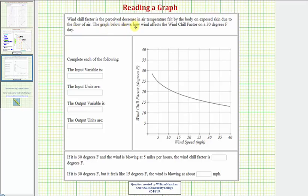Windchill factor is the perceived decrease in air temperature felt by the body on exposed skin due to the flow of air. The graph below shows how windchill affects the windchill factor on a 30 degree Fahrenheit day.